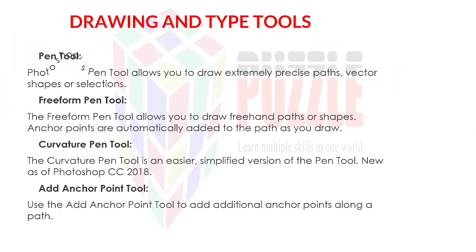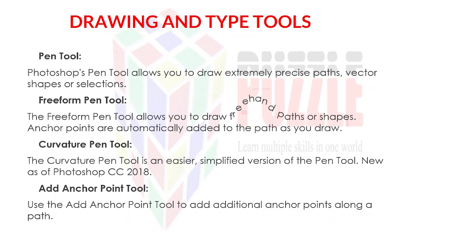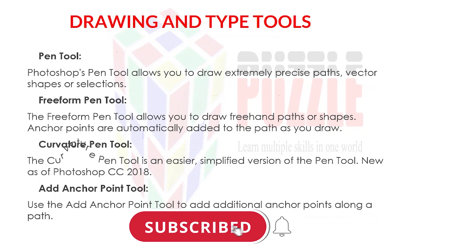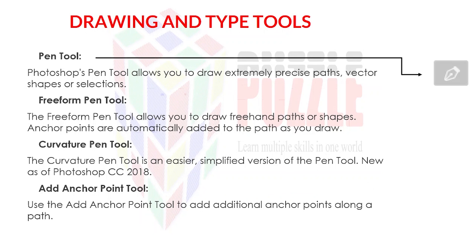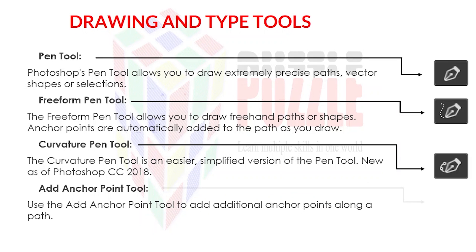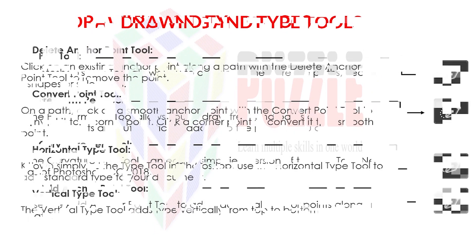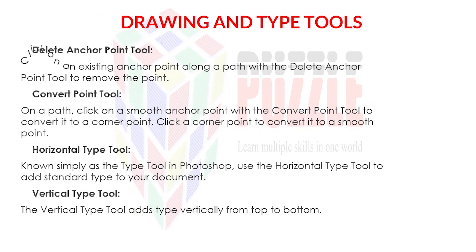Pen tool: Photoshop's pen tool allows you to draw extremely precise paths, vector shapes, or selections. Freeform pen tool: the freeform pen tool allows you to draw freehand paths or shapes — anchor points are automatically added to the path as you draw. Curvature pen tool: an easier, simplified version of the pen tool, new in Photoshop CC 2018. Add anchor point tool: use it to add additional anchor points along a path. Use the delete anchor point tool to remove a point by clicking on an existing anchor point.